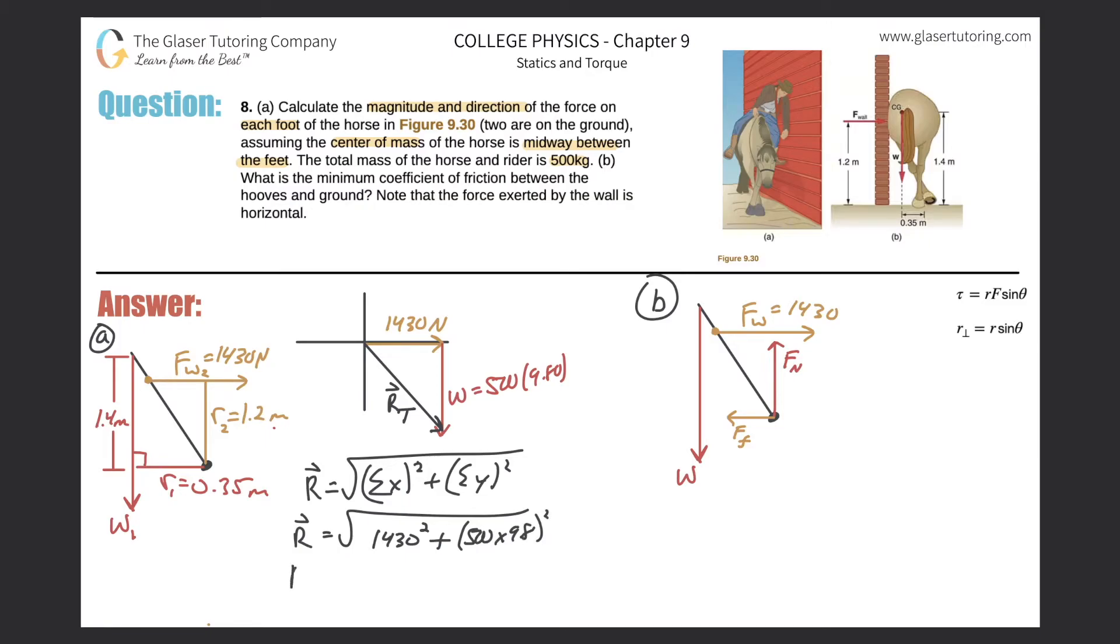Let's see what we get for the resultant vector. Square root of 1430 squared plus parentheses 500 times 9.8 squared, and we get a value of—remember, this represents the total—5104.4.